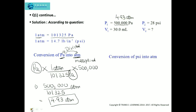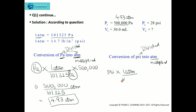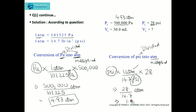Now converting PSI into atmosphere: the PSI unit is divided and atmosphere is multiplied. The relation is 1 atmosphere equals 14.7 PSI, and the value to convert is 28 PSI. So we write 28 PSI divided by 14.7 PSI per atmosphere. The PSI units cancel, giving us 1.90 atmosphere. So Pressure 2 is 1.90 atm.